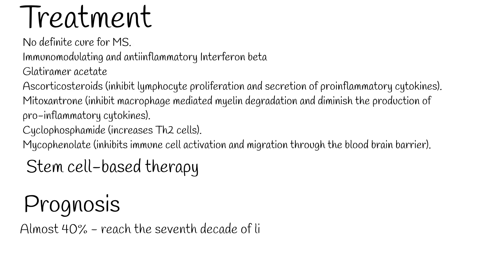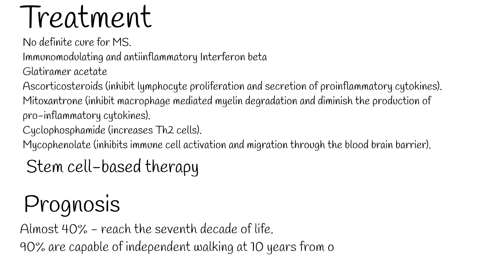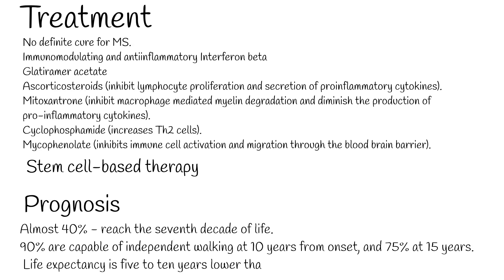Prognosis: Almost 40% of people with multiple sclerosis reach the 7th decade of life. Although most people lose the ability to walk before death, 90% are capable of independent walking at 10 years from onset and 75% at 15 years. Life expectancy is 5 to 10 years lower than that of the unaffected population.